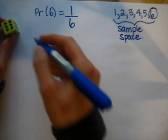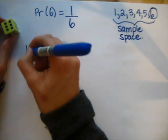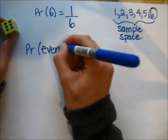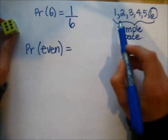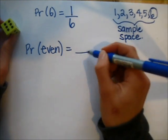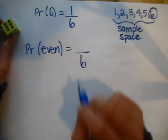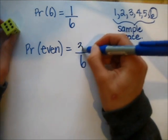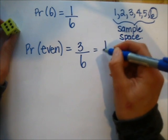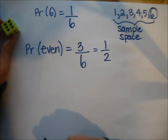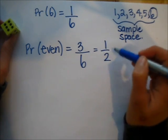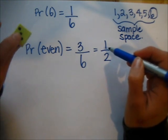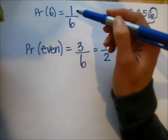What if I wanted the probability of getting an even number? Again, I've got 6 possible outcomes, but this time there are 3 even numbers. So my probability is 3 sixths, which I can simplify to a half. So it's more likely that I would roll an even number, because there are more even numbers on a dice than just rolling, say, a 6.